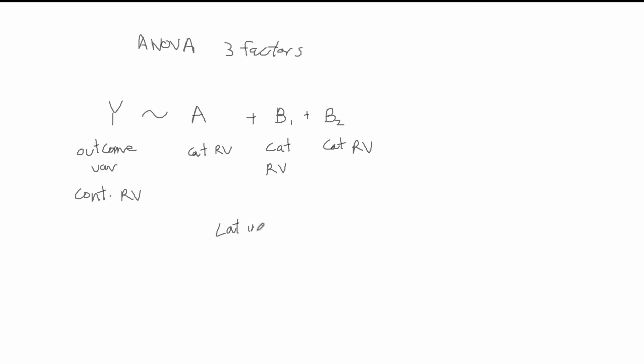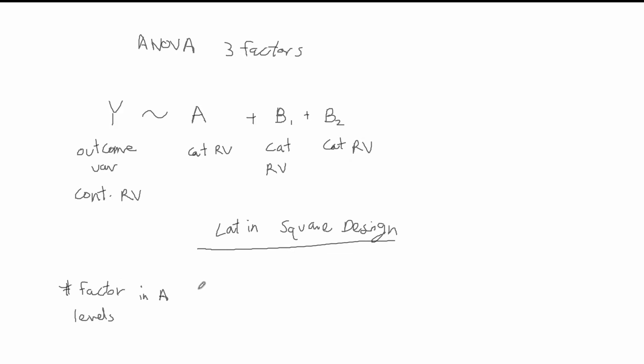The Latin square design is a special case of this ANOVA model where the factor levels are the same in all three variables. The number of factor levels in variable A equals the number of factor levels in b1 and in b2. For different Latin square designs you can have different numbers of factor levels, but for all three factors in your model they have to be the same.